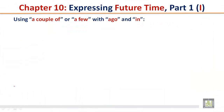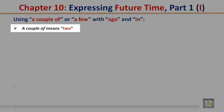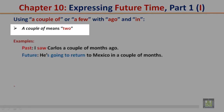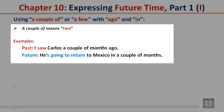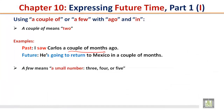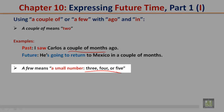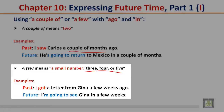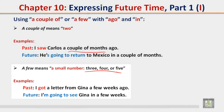Using a couple of or a few with ago and in. A couple of means two. Past: I saw Carlos a couple of months ago. Future: He's going to return to Mexico in a couple of months. A few means a small number — three, four, or five. Past: I got a letter from Gina a few weeks ago. Future: I'm going to see Gina in a few weeks.